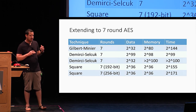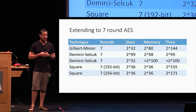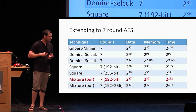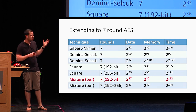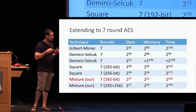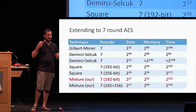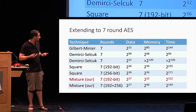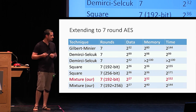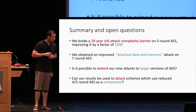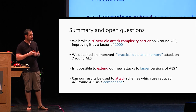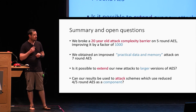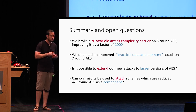We also tried to extend our attack, and were able to extend it to up to seven-round AES. For seven-round AES, we obtain an improvement in what we call the practical data and memory regime, where we assume it is much harder to get a lot of data and memory than extra time complexity. We want data and memory complexity to be something reasonable even today, even though the time complexity is still high but the best we can achieve.